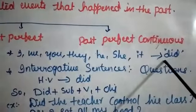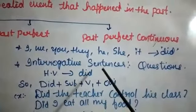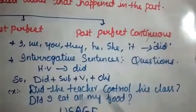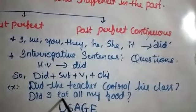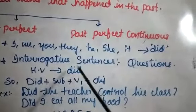Now, interrogative sentences — which means questions. The helping verb is 'did', and we have to place it at the beginning of the sentence followed by the subject, then V1. For example: 'Did the teacher control his class?' — 'Did' at the beginning, followed by subject, then V1 'control'. Another example: 'Did I eat all my food?' — 'eat' is V1 because it comes with 'did'.